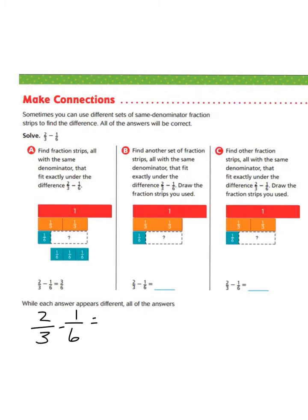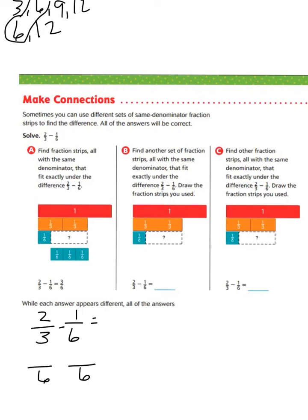If we list our multiples of 3 and 6, we see 3, 6, 9, 12 — and for 6: 6, 12 — and we can already stop because we see our very first common multiple is 6. We use 6 as our denominator for both fractions. We know that 6 divided by 3 equals 2, and 2 times 2 equals 4. Since we already have a denominator of 6, we bring that fraction straight down, put our subtraction sign, and 4 minus 1 equals 3 sixths.